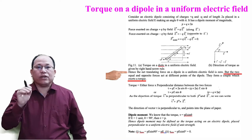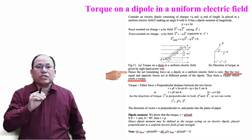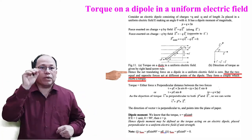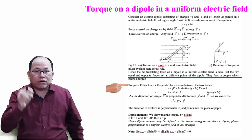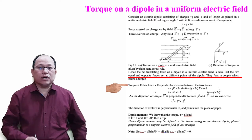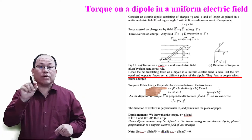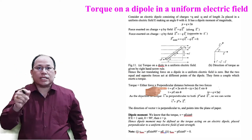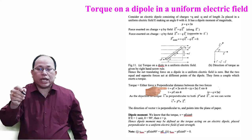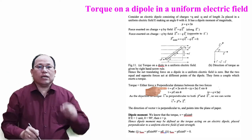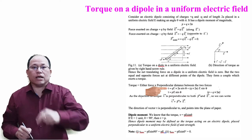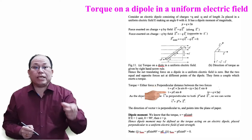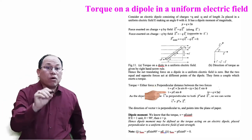The net translational force is zero, but the two equal and opposite forces act at different points of the dipole — they form a couple, so a torque is produced. Therefore, torque equals force into perpendicular distance between the two forces. Torque tau equals qE into the perpendicular distance, which is 2a sin theta. So torque equals q into 2a into E sin theta. Since q into 2a is the dipole moment p, torque equals pE sin theta.